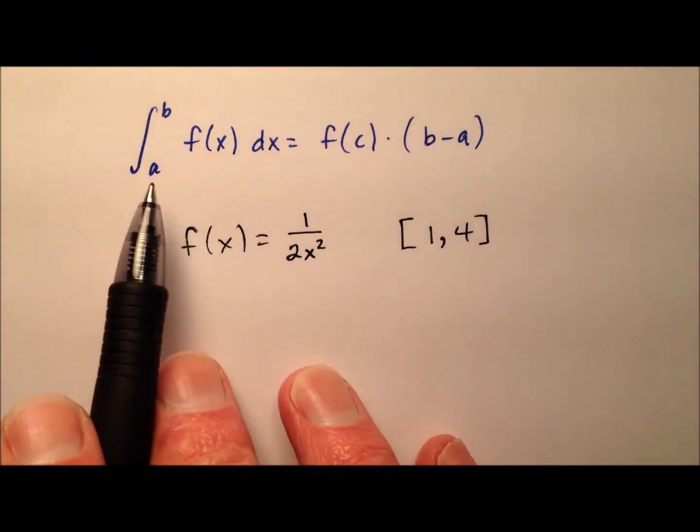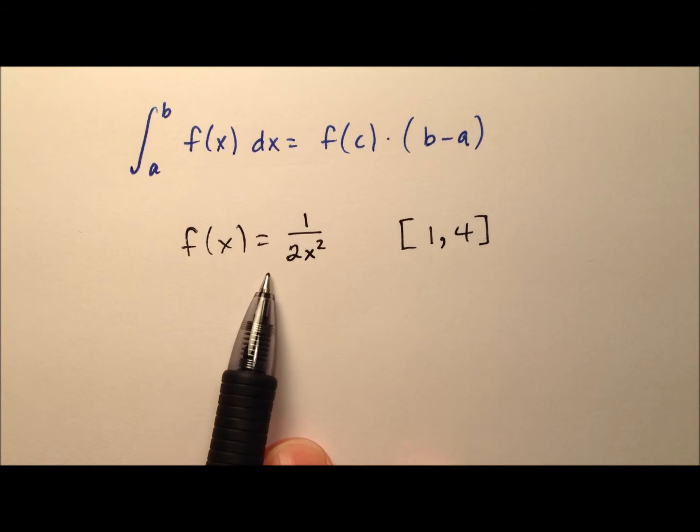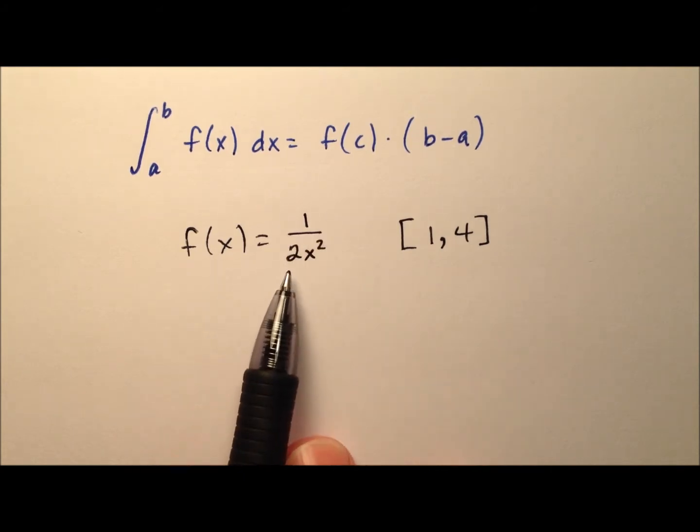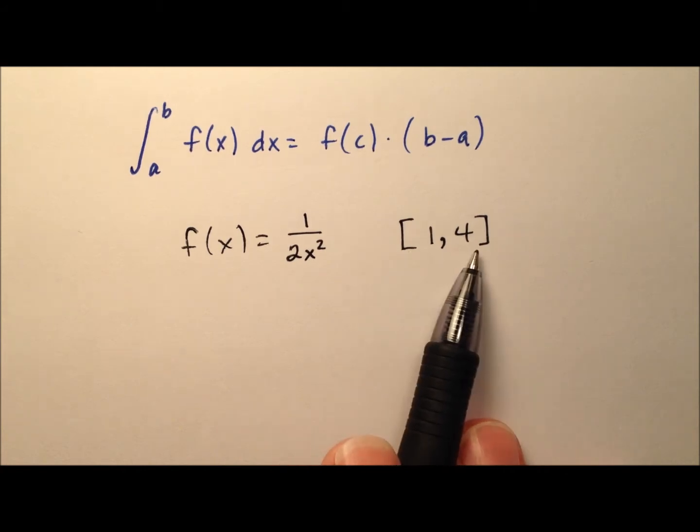In this example, I'd like to take a look at the mean value theorem for integrals and apply it to this function f of x equals 1 over 2x squared. And we're going to do so over this closed interval 1 to 4.